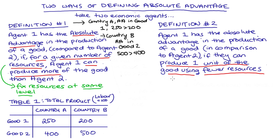You might get the intuition that in all the important respects, this second definition is really just a restatement of the first. To say that you can do more with a fixed amount of resources is just to say that you need fewer resources to make one unit. I think that's right, but let's show this more formally.